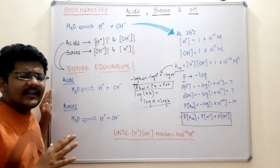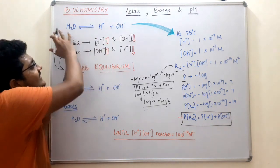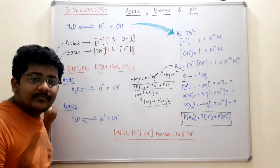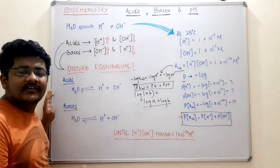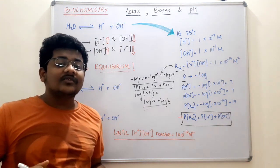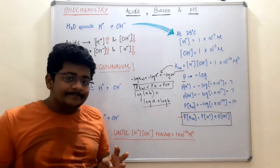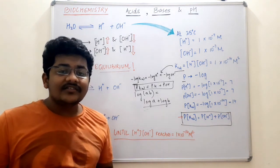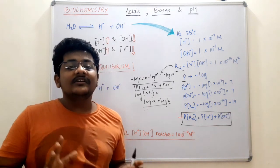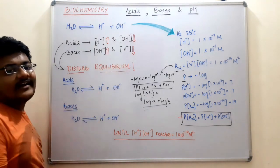Now let us discuss what happens if we try to disturb the equilibrium. H2O is being converted to H⁺ and OH⁻, and this reaction is in equilibrium — meaning the rate of forward reaction equals the rate of reverse reaction. If we try to disturb the equilibrium by adding more hydrogen ions from outside into the water, the compounds which increase the concentration of hydrogen ions are known as acids. So if you add something in water and it increases hydrogen ion concentration, that compound is an acid.